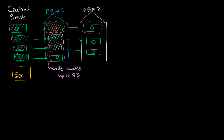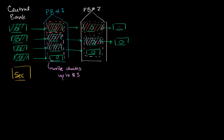In private bank number two, the $2 are deposited into a checking account. Private bank two has to keep some reserves; being even more conservative, it only lends out half — one dollar — even though it could lend out 90%. The person lent that dollar just puts it in their wallet. Private bank two can also lend out the entire $1 in savings, and the person lent that dollar also puts it in their wallet.